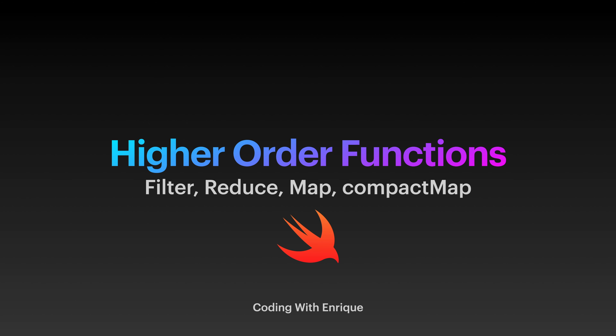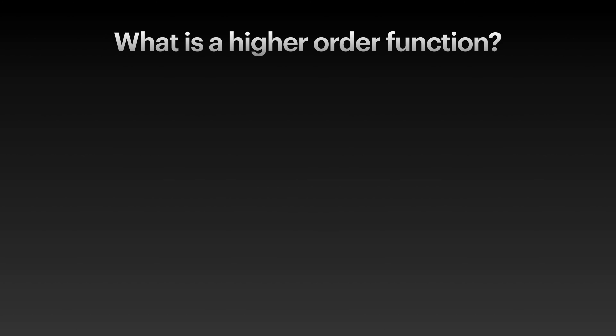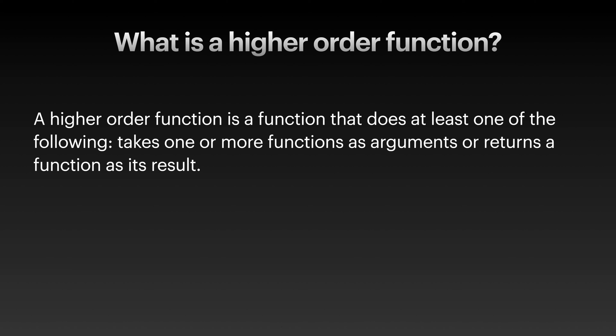Hello and welcome everybody. In today's video we're going to be going over higher order functions, specifically filter, reduce, map, and compact map. A higher order function is a function that does at least one of the following: it takes one or more functions as arguments, or it returns a function as its result. If this doesn't make sense right now, don't worry — it'll start to make more sense as we go through some examples.